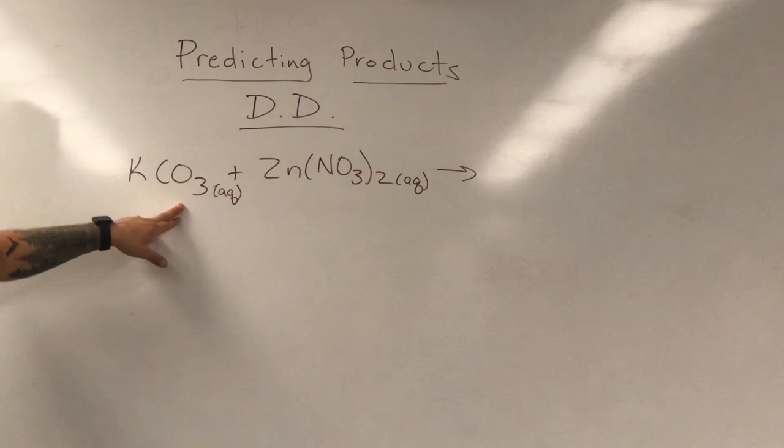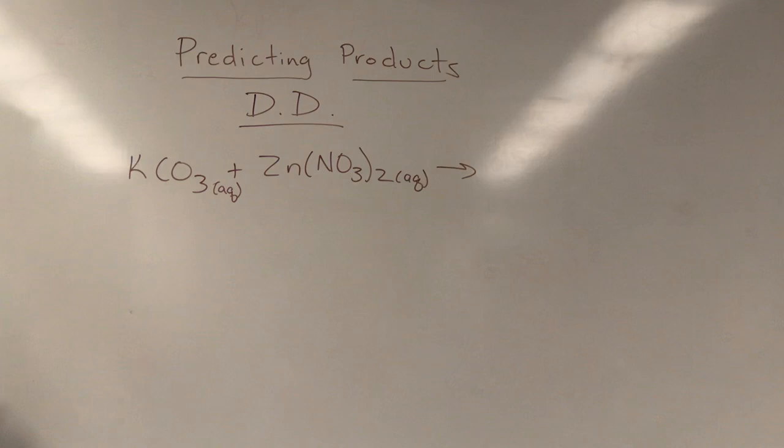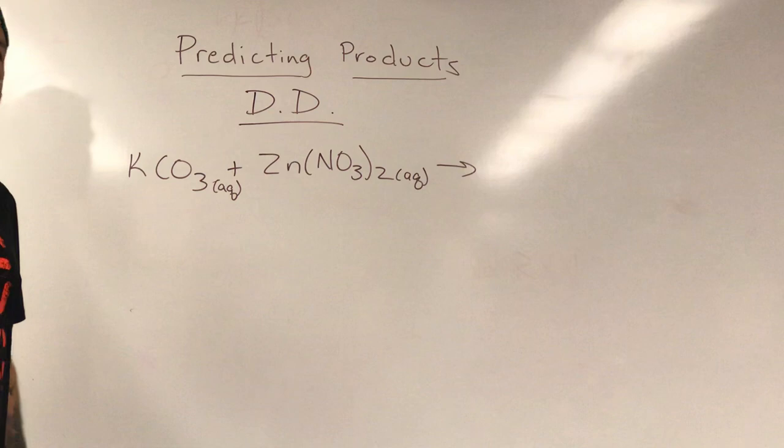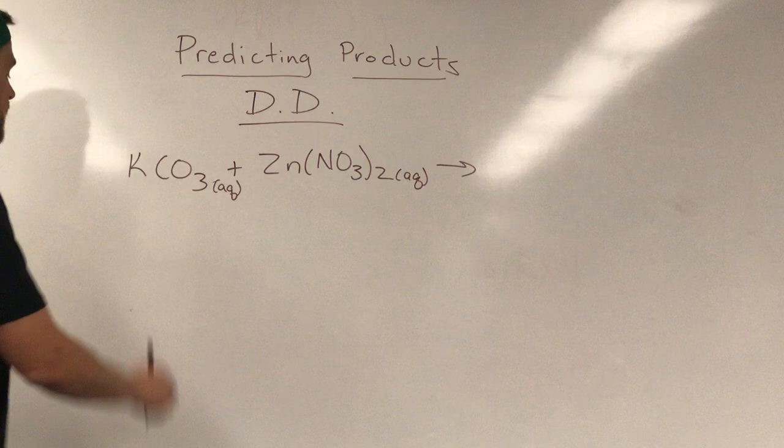So I have two reactants. I have potassium carbonate and I have zinc nitrate. What I'm going to do is, just like I did for single displacement, I'm going to figure out the charges on everything because I want to know what the charge of everything is. And three of these things I know.